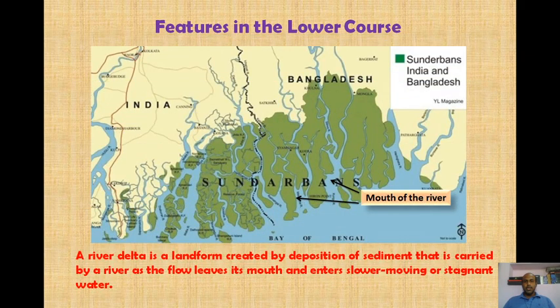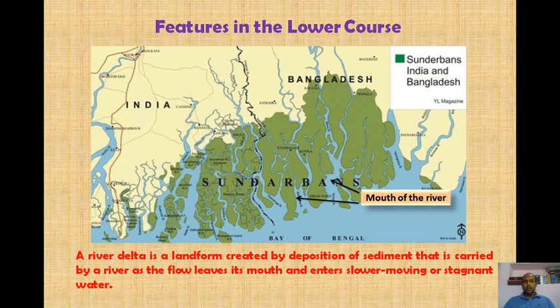Normally, we can see a delta as an important feature in the lower course. A delta is formed by deposition of sediment carried by a river as the flow leaves its mouth and enters the slower-moving or stagnant water of the sea or ocean. As you can see in this diagram, the Sundarbans delta is created when the waters of river Ganga and Brahmaputra together enter the Bay of Bengal.